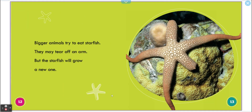Bigger animals try to eat starfish. They may tear off an arm — look, part of an arm is missing. But the starfish will grow a new one. Excellent!